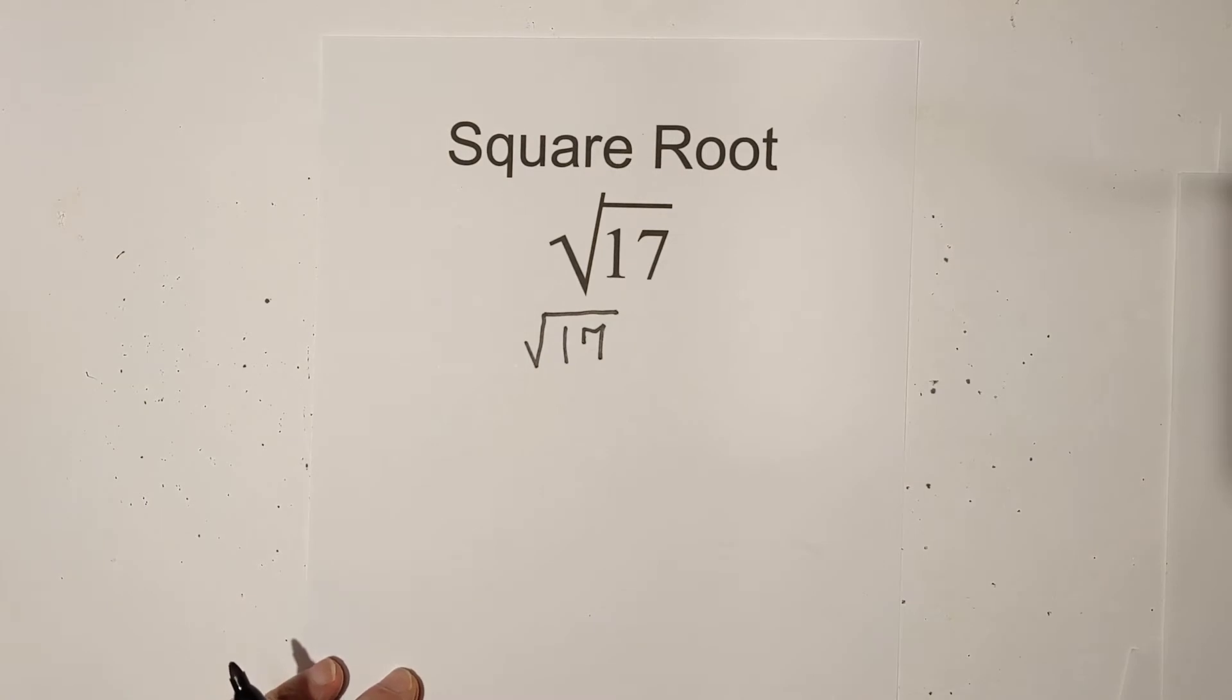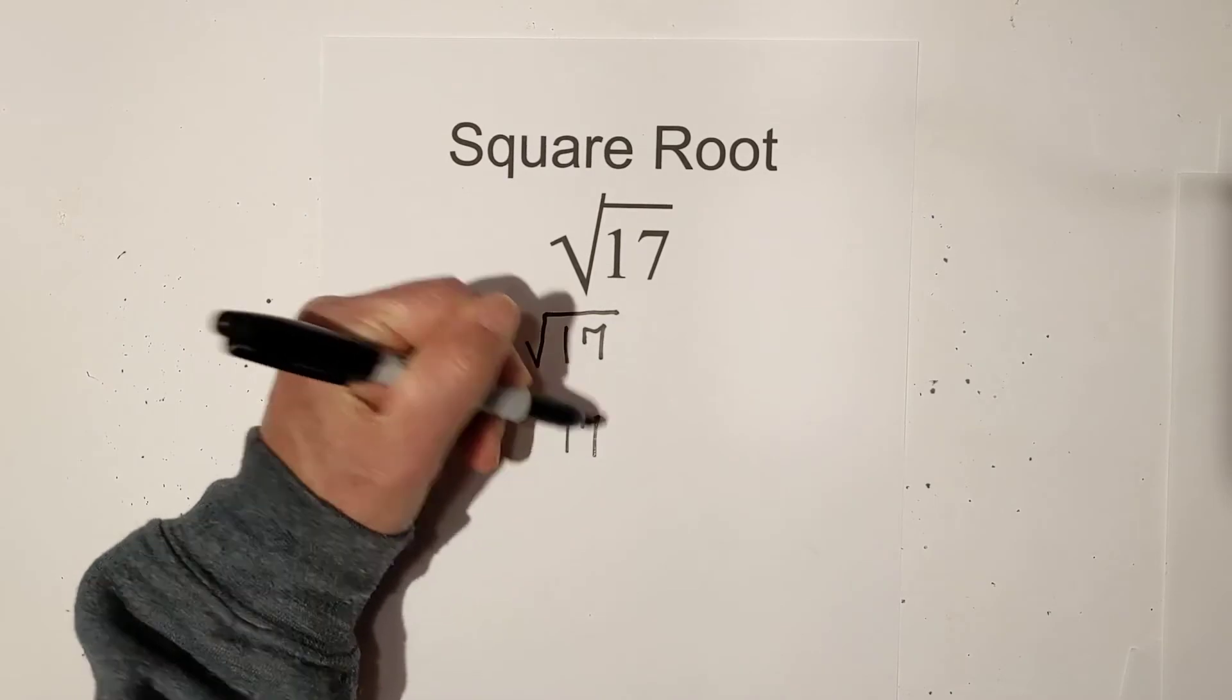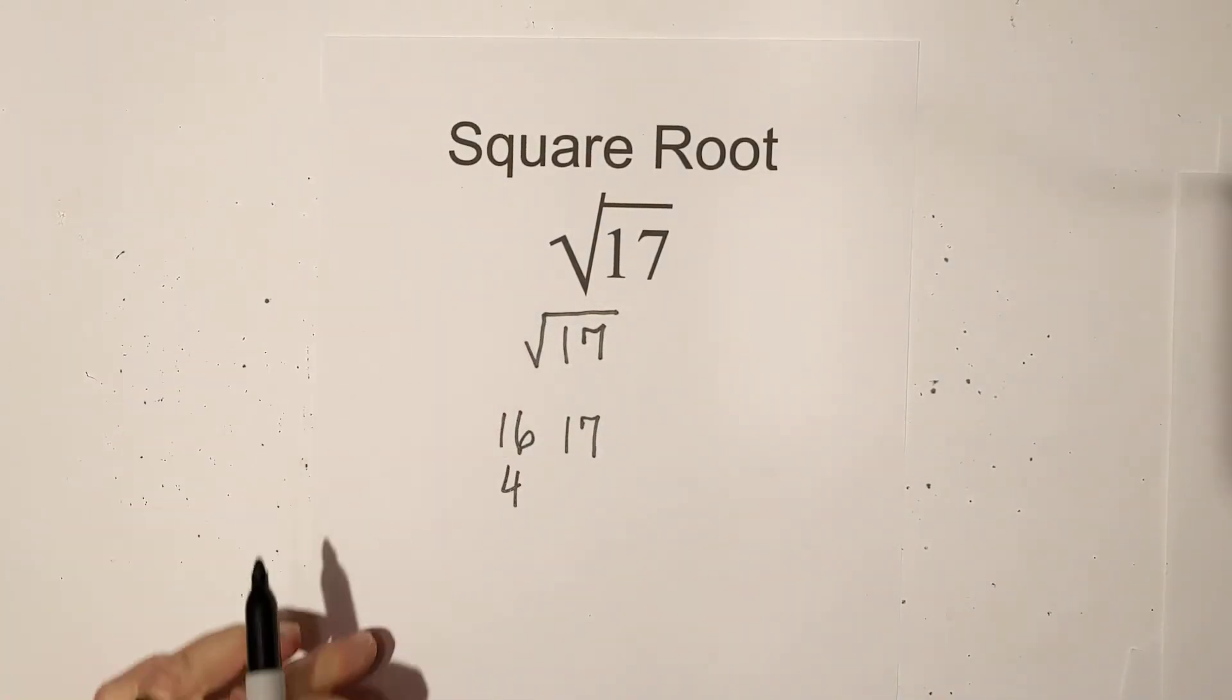Now, you could estimate what the square root is, and I'll show you how to do that. You have 17, and then you have the perfect square 16, which is 4,